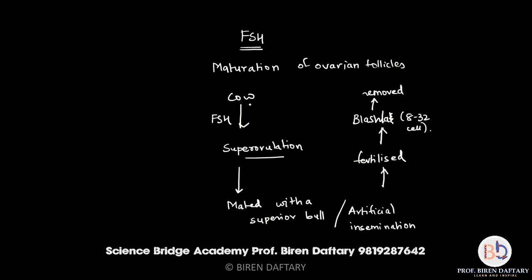To summarize: the cow was given a high dose of FSH, causing super ovulation wherein 6 to 8 ova matured. The super ovulating cow was then mated with a superior bull or artificially inseminated, so the sperms fertilized almost all the ova. A large number of zygotes developed into blastulas, and when between the 8 and 32 cell stage, they were removed and inserted into a surrogate mother.